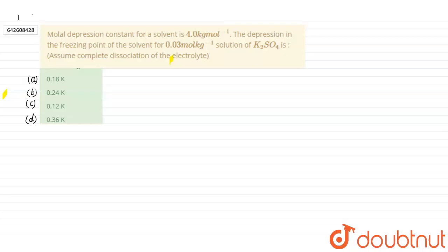Hi guys, in this question, molar depression constant for a solvent is 4.0 Kelvin kilogram mole inverse and the depression in freezing point of the solvent for 0.03 mole kilogram inverse solution of K2SO4 is 0.18 Kelvin...